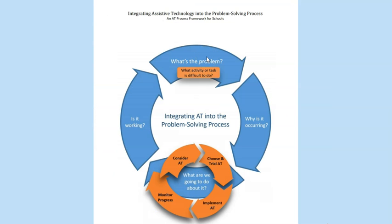As a team, we've identified the problem — reading, decoding, or accessing the text in the classroom. We've brainstormed why we think it is occurring. We've looked at different physical, sensory, and environmental considerations. Now we're looking at considering, choosing, trialing, and implementing assistive technology. So what are we going to do about it?